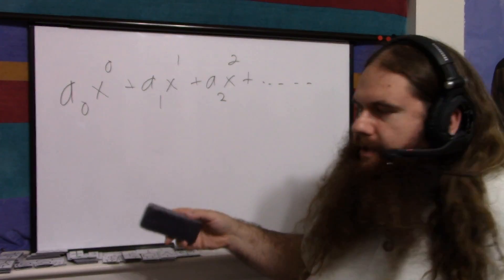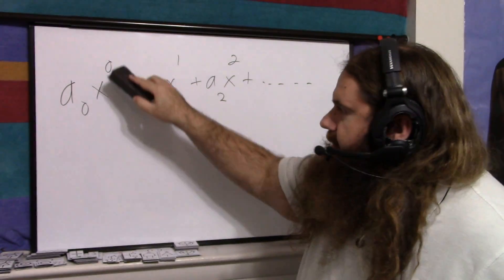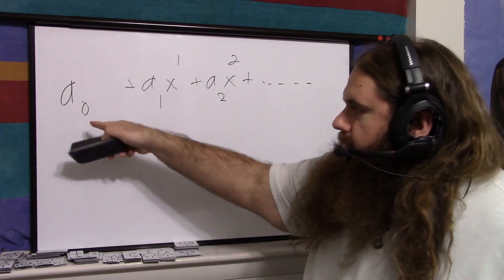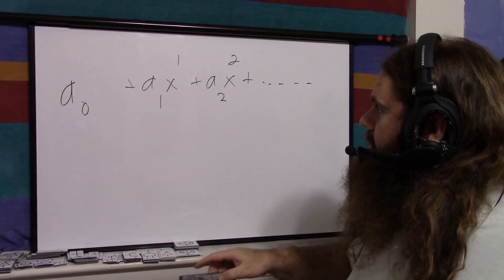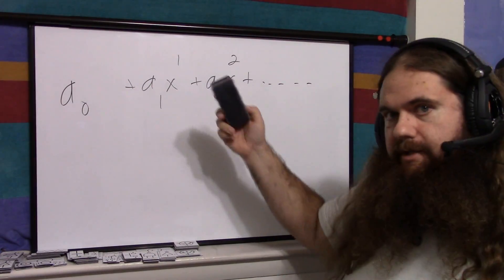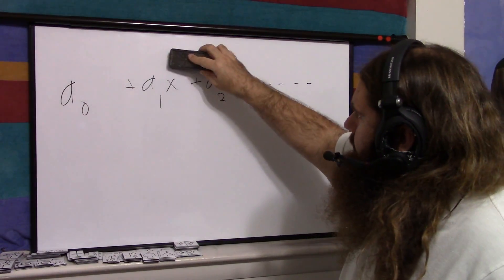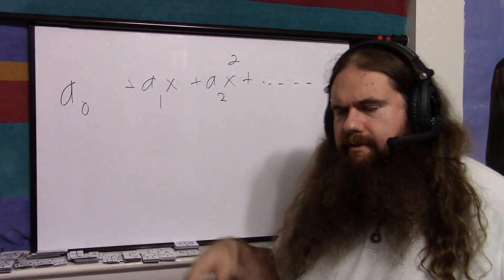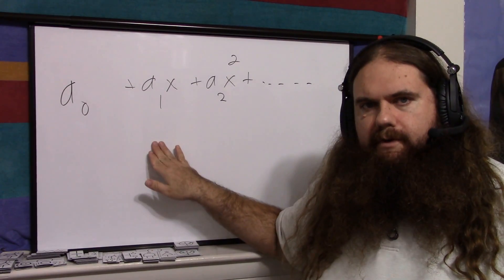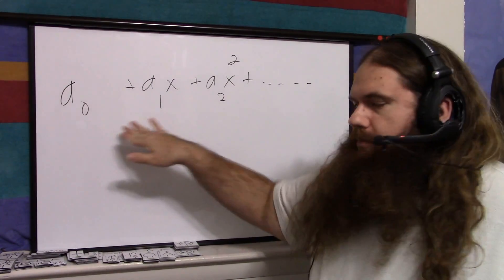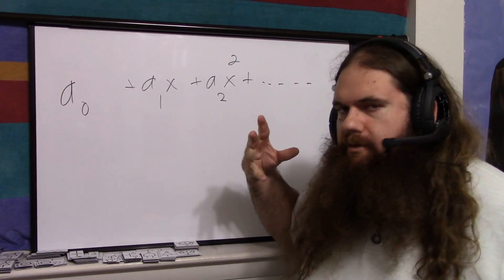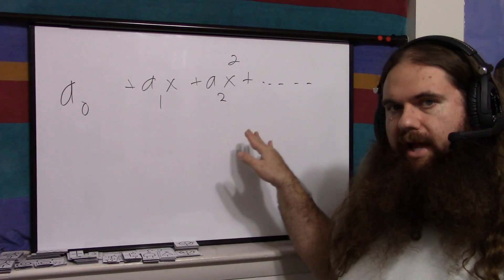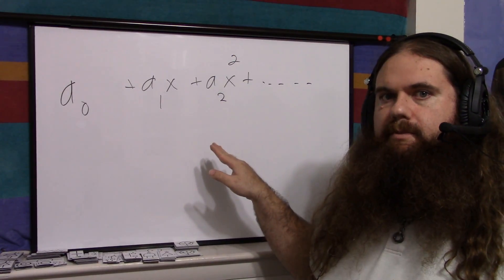Just to be obvious: x to the 0, anything to the 0 is 1. Anything times 1 is just itself. And then x to the 1 is just x. So you might recognize that. Any function can be approximated to any degree of accuracy you like by just adding more terms.